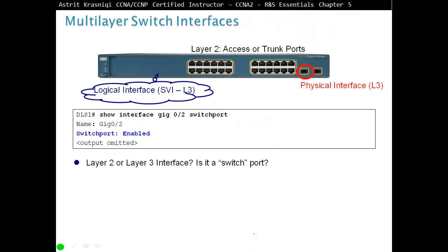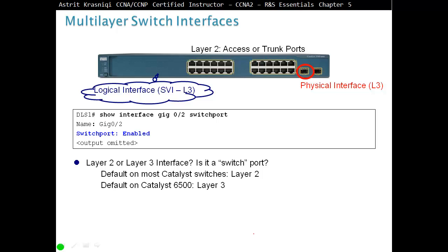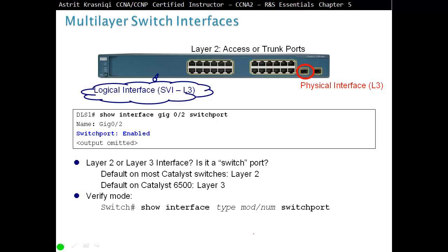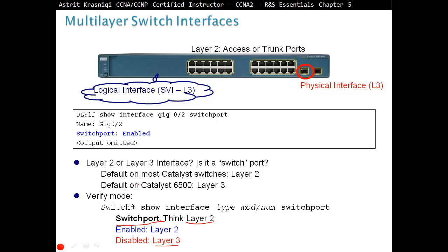Multi-layer switch interfaces — Layer 2 or Layer 3. If it's a switch port, it defaults to Layer 2 on most Catalyst switches. However, the Catalyst 6500 defaults to Layer 3. To verify, use the command 'show interface [interface] switchport'. If switchport is enabled, it is working as Layer 2. If switchport is disabled, it is working as Layer 3.